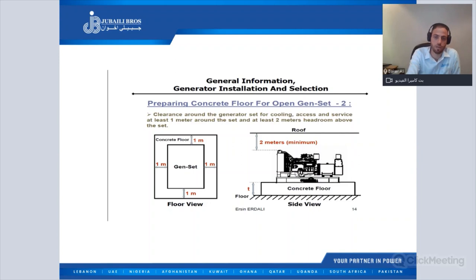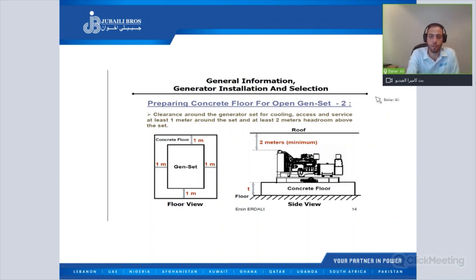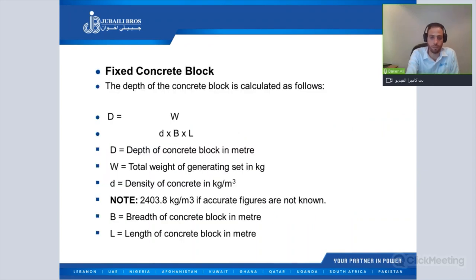We have to keep 300 to 450 mm on all sides of the generator set — from the front, back, right, and left sides. This determines the length and width of the foundation. Now, for the depth, there is a formula we use to calculate the depth of the concrete foundation.